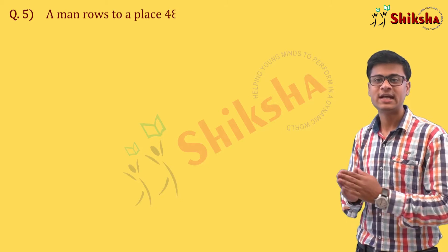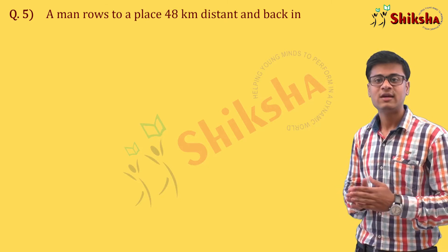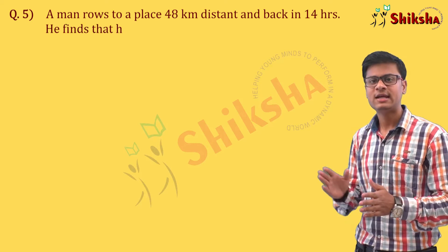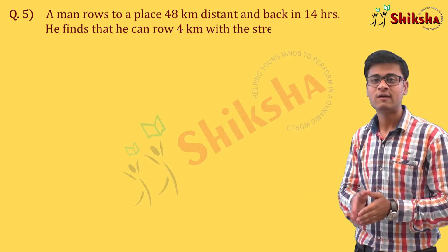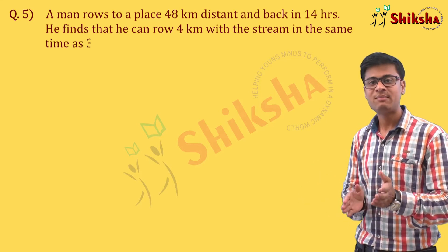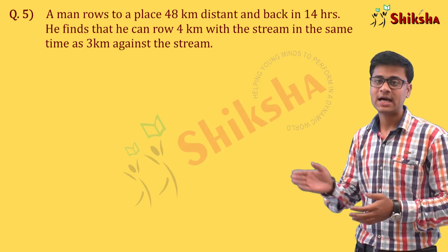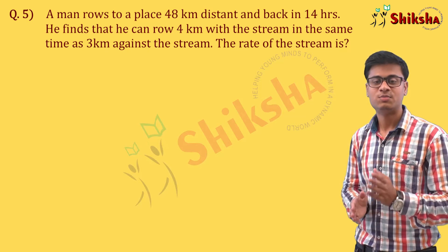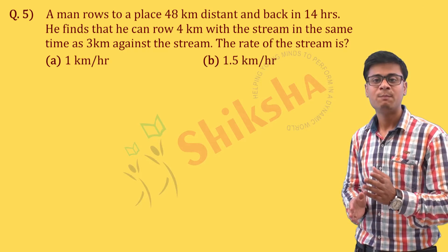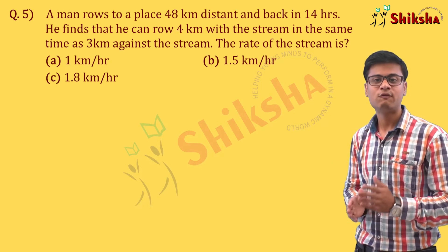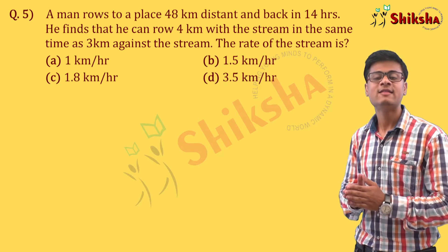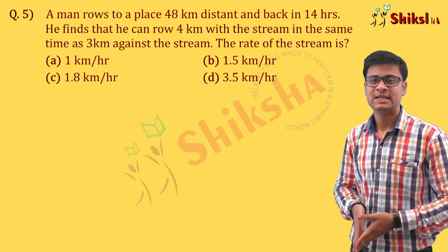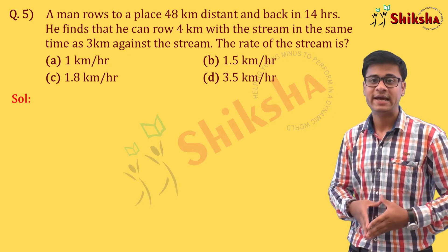Next question: A man rows to a place 48 km distant and back in 14 hours. He finds that he can row 4 km with the stream in the same time as 3 km against the stream. The rate of the stream is: Option A 1, B 1.5, C 1.8, or D 3.5 km per hour.